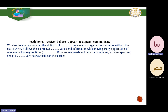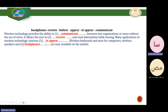Here is a vocabulary exercise. 'Wireless technology provides the ability to communicate between two organizations or more without the use of wires. It allows the user to send and receive information while moving. Many applications of wireless technology continue to appear — wireless keyboards and mice for computers, wireless speakers and headphones are now available on the market.' Note: the correct word here should be 'mice' — though actually 'mouses' was suggested as a correction, but 'mice' is the standard plural.